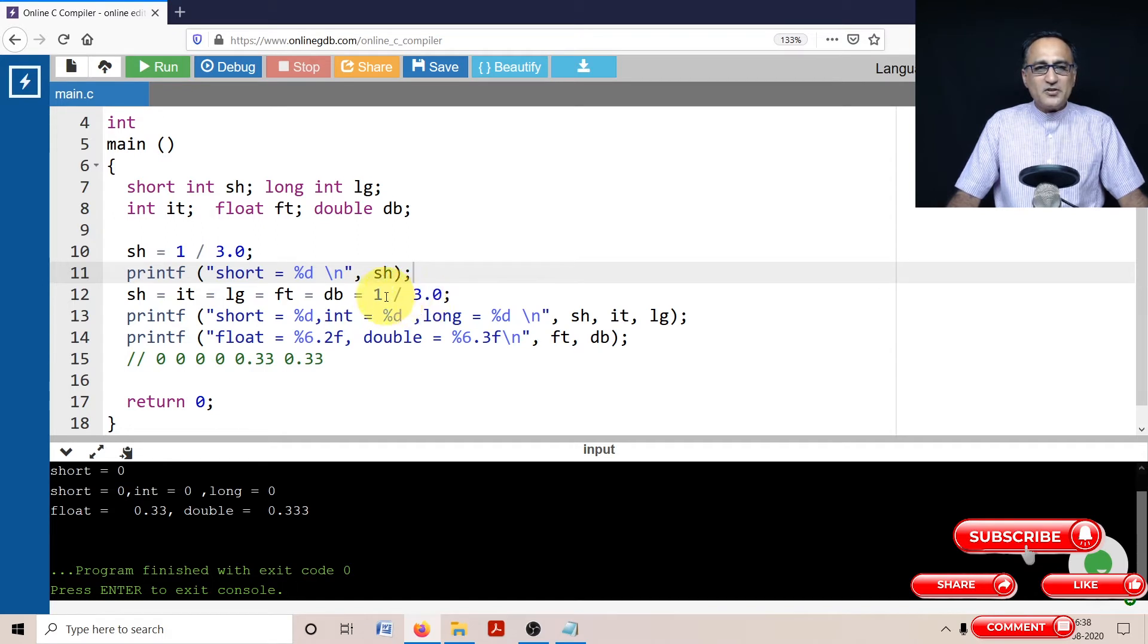So 1.0 divided by 3.0, the result is 0.33. db or double is going to be 0.33. Since 0.33 can also be stored in float ft, any float variable is also 0.33.